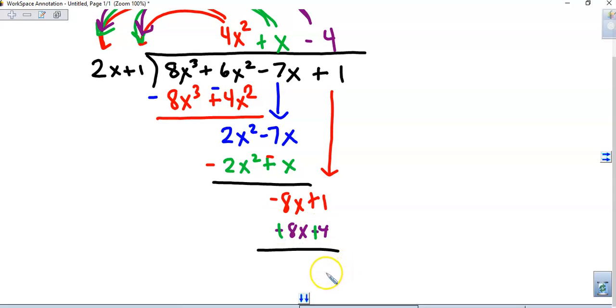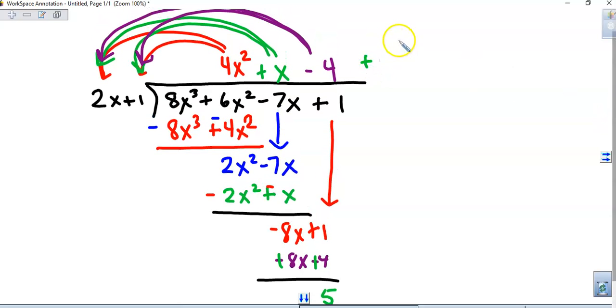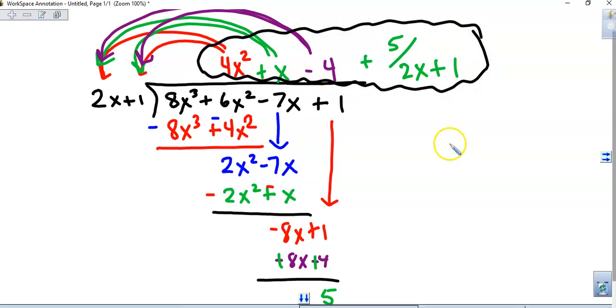What's left is called the remainder, positive 5. So we're going to write that remainder as plus 5 over my divisor, 2x plus 1. And that is the answer for your division problem. Hope that helped.